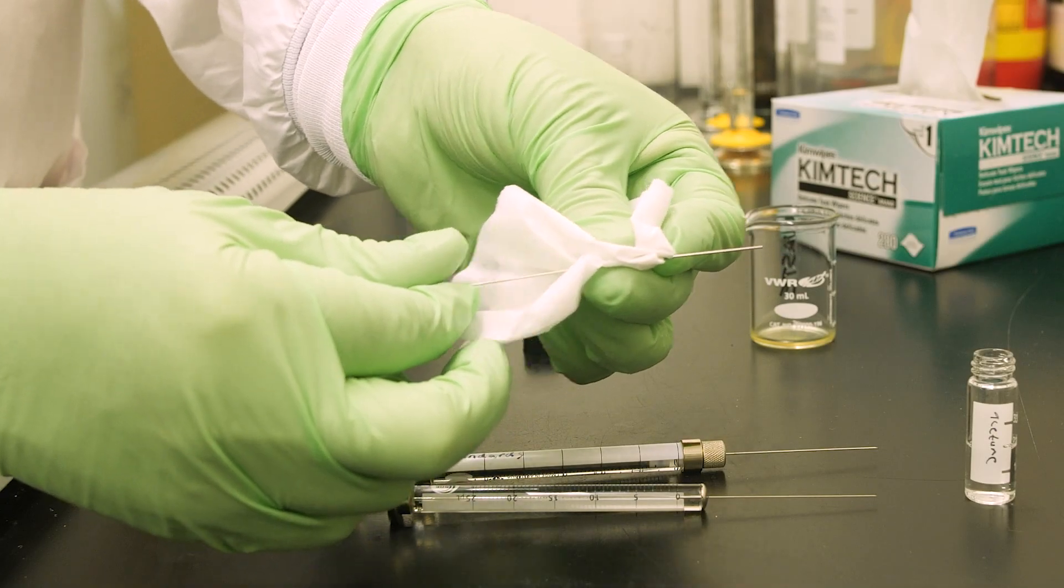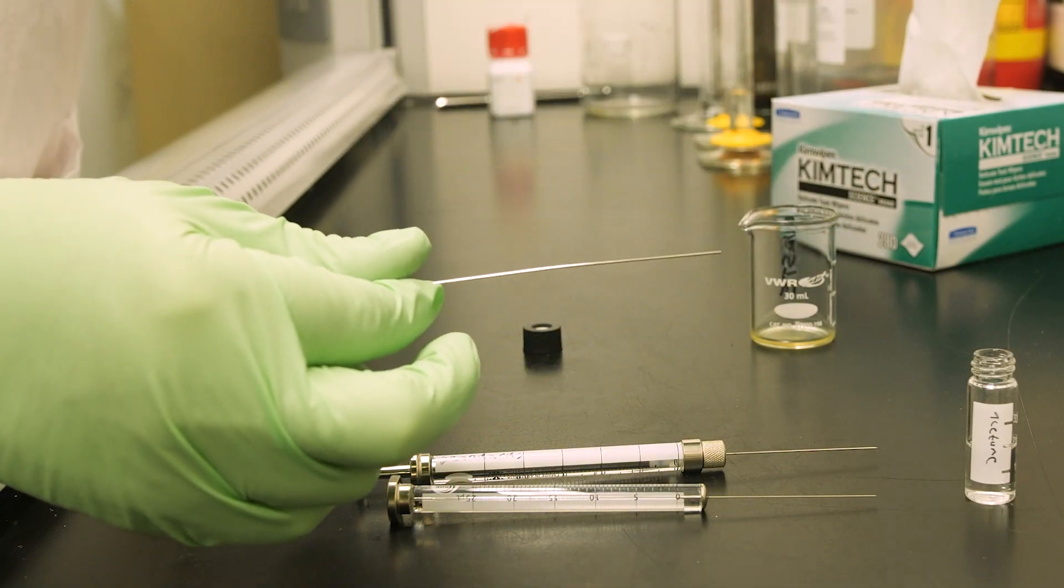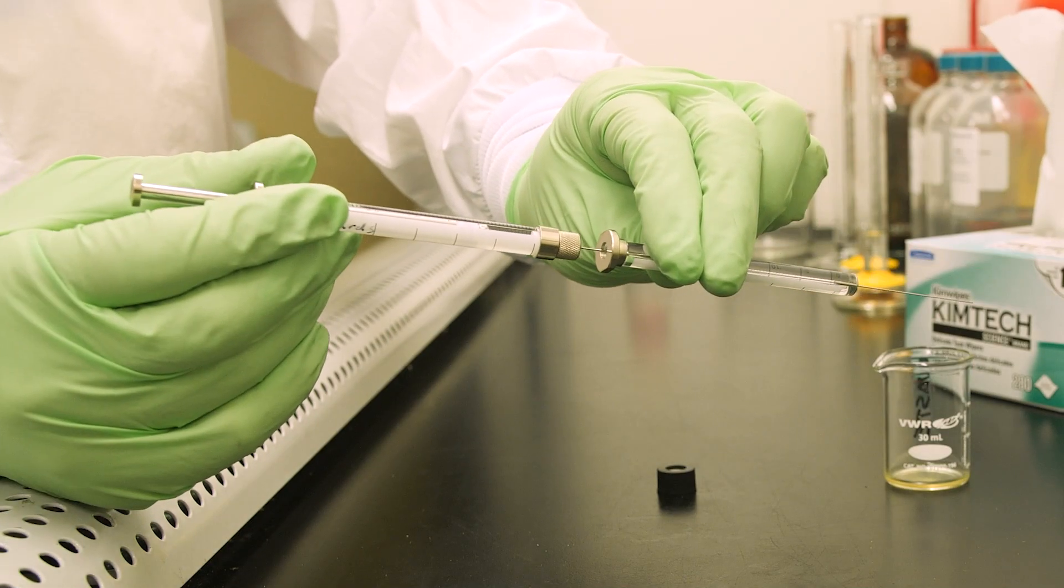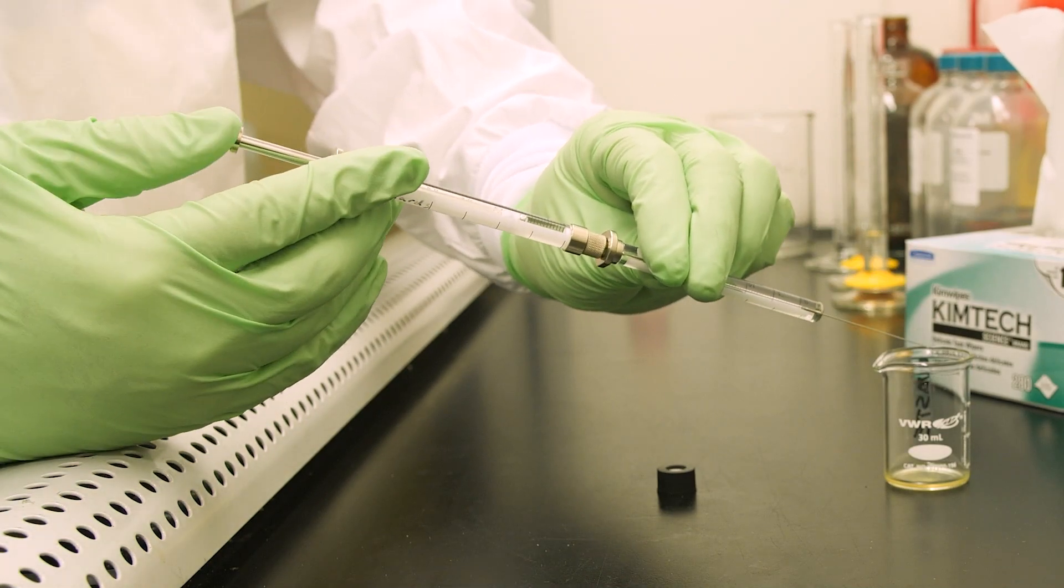For debris, remove the plunger from the barrel and clean the plunger with a wipe dampened with solvent. Then flush the barrel with solvent using a second syringe to ensure all the debris has been cleared.